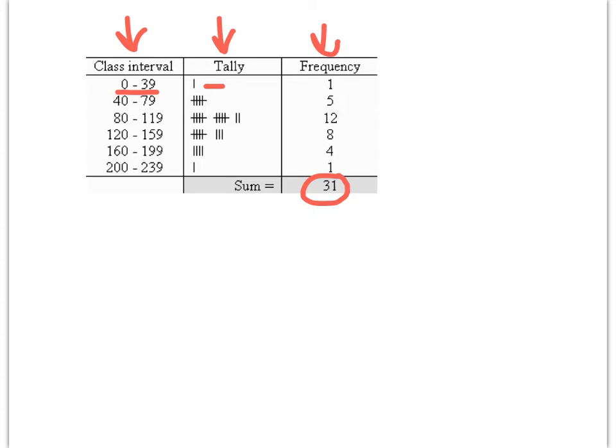A couple things about this is we have the class intervals are defined by lower. The class interval is represented in this distribution table with a lower class limit. So that's the lowest value that can be in that class. And an upper class limit. And that's the biggest value that can be in that class. So it's boundaries.